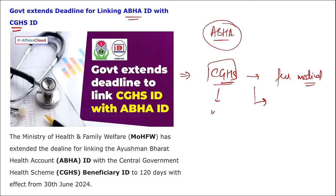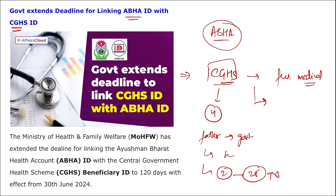For example, if a central government employee is the father in a family of four, then the mother and two children below 25 years of age are all covered under CGHS. The mother is covered irrespective of age. Once children are above 25, they lose the benefit. Conversely, if the children are government employees, their parents will also be covered under CGHS.